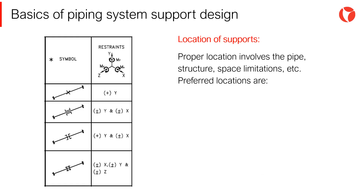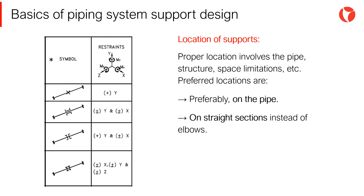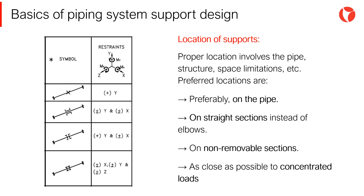The proper location of hangers or fixed supports involves considerations of the pipe itself, the structure to which the load is transmitted, and space limitations. The preferred points for the location of supports are on the pipe itself and not on components, on straight sections of pipes instead of on elbows, on sections of pipes that do not require frequent removal for cleaning or maintenance, and as close as possible to large load concentrations.